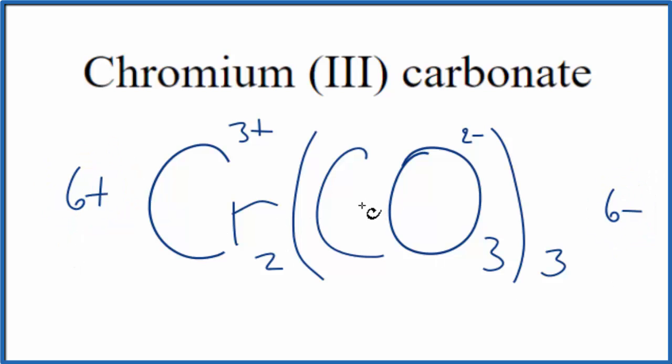This is the formula for chromium 3 carbonate. We have the Cr2, CO3, 3, 2 chromium atoms, and then these 3 carbonate ions. This is Dr. B with the formula for chromium 3 carbonate. Thanks for watching.